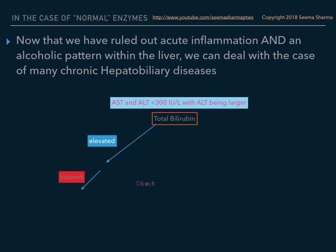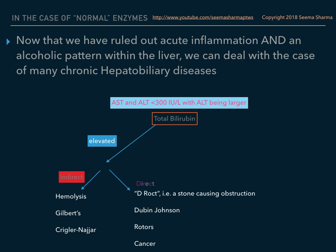Indirect bilirubin is calculated by subtracting the direct from the total. If the indirect is elevated, you are dealing with hemolysis, Gilbert's syndrome, or Crigler-Najjar disease. If the direct bilirubin is elevated — noted as DRC — the possible diagnoses are Dubin-Johnson syndrome, Rotor syndrome, and cancer. A stone causing obstruction is also a common and very possible cause of direct hyperbilirubinemia.